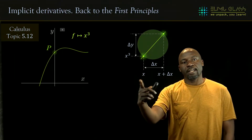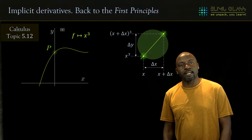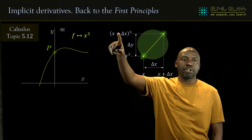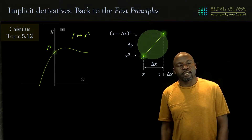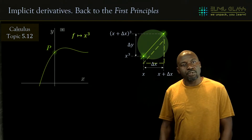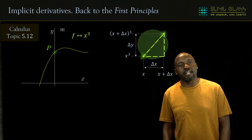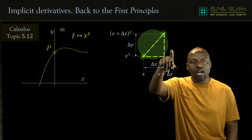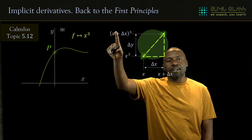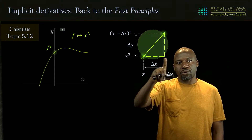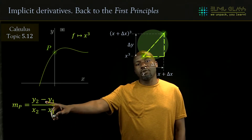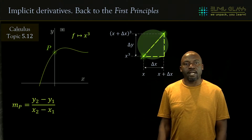We end up with a change in y and a change in x, where y2 is (x + Δx) cubed. We draw a triangle and use it to determine the gradient of the line — basically change in y over change in x, which is y2 minus y1 divided by x2 minus x1. So the gradient at point P is y2 minus y1 over x2 minus x1.